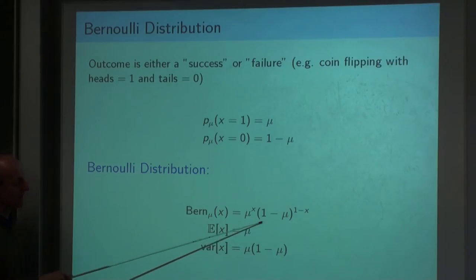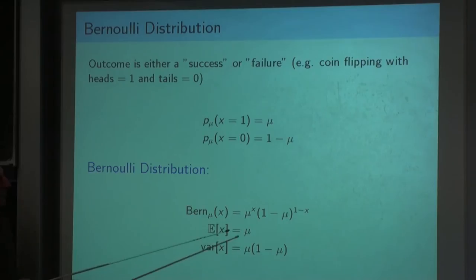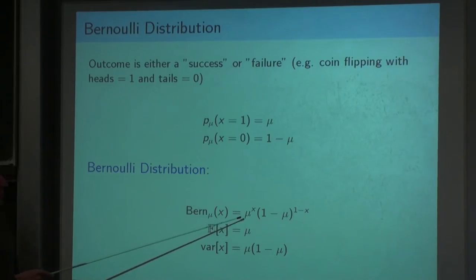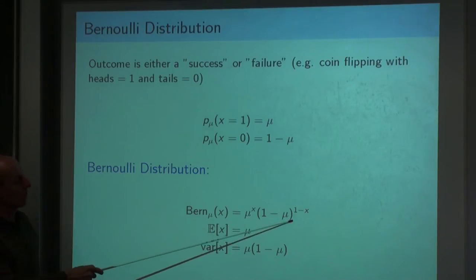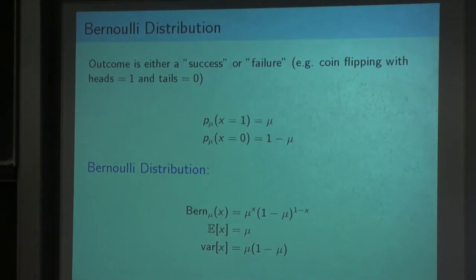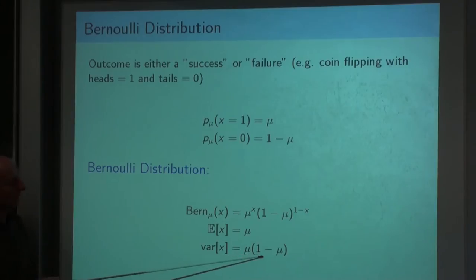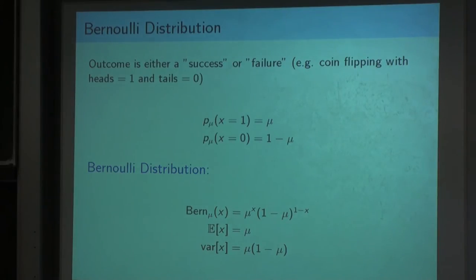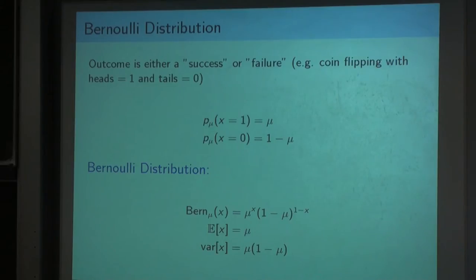Another way to write the Bernoulli distribution is p(x) = mu^x times (1 minus mu)^(1 minus x), where x only takes the values 0 and 1. For x equals 1 we get mu, and for x equals 0 we get 1 minus mu. The expected value of the Bernoulli distribution is mu, and the variance is mu times (1 minus mu). Now we want to determine this parameter mu using the maximum likelihood estimator for a given set of data points.